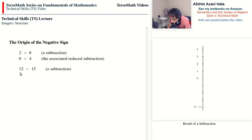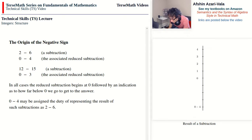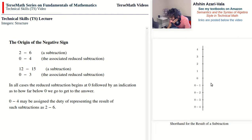Here is a second example: 12 minus 15. We subtract 12 from both operands — the first becomes 0 and the second becomes 3 — giving the reduced subtraction 0 minus 3. In all cases, the reduced subtraction begins with 0 followed by how far below 0 we go to get to the answer. We assign 0 minus 4 the duty of representing the result of subtractions like 2 minus 6, and doing the same for all other points gives us 0 minus 1, 0 minus 2, 0 minus 3, and 0 minus 4 on the thermometer.